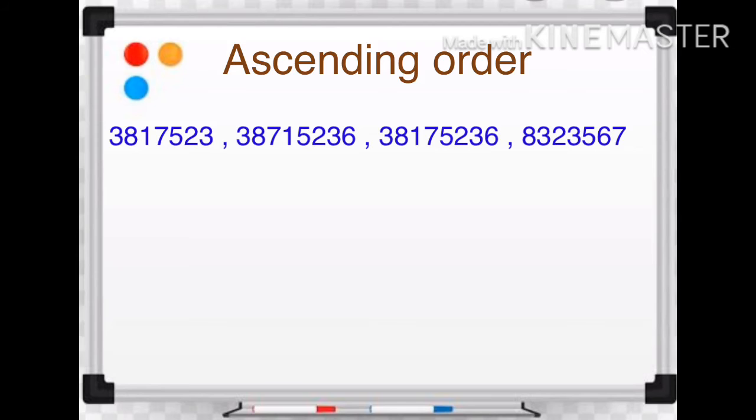Here you have been given four numbers. So how can you arrange these four numbers into ascending order? Let's begin with step number one. Step one is, count the number of digits in each of the numbers.